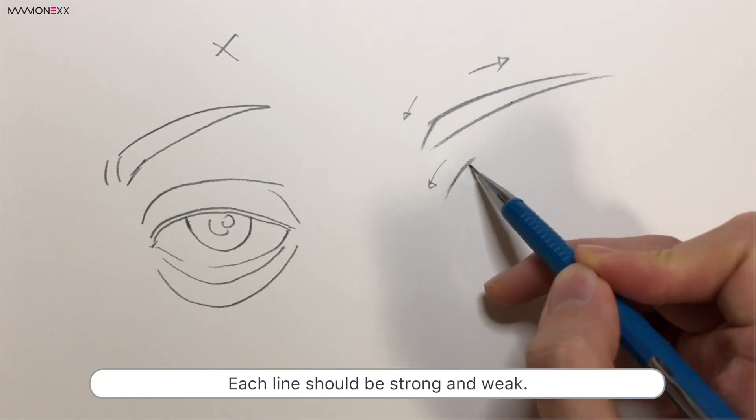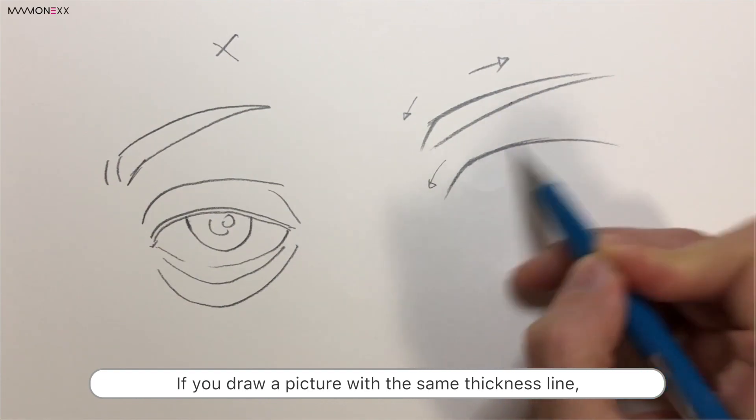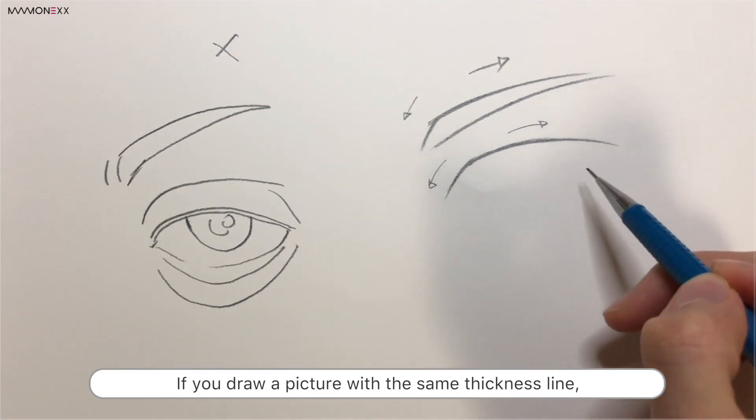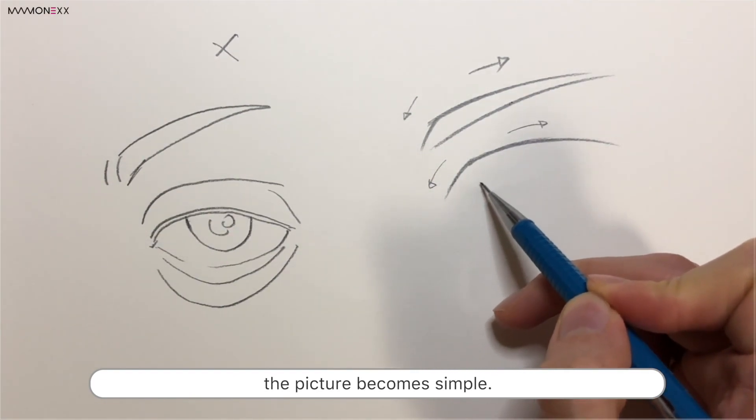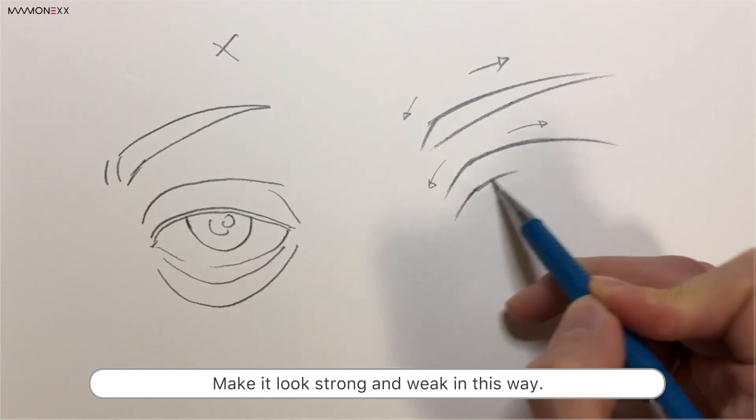Each line should be strong and weak. If you draw a picture with the same thickness line, the picture becomes simple. Make it look strong and weak in this way.